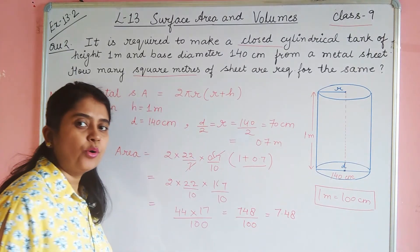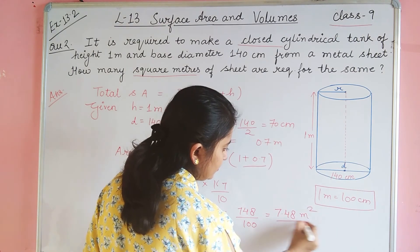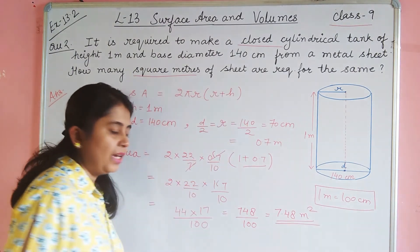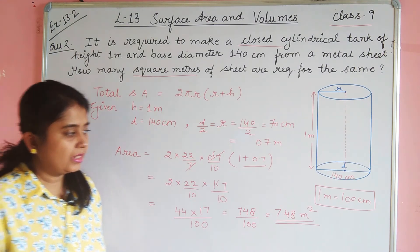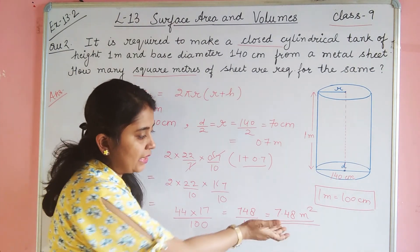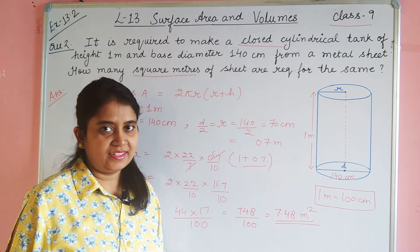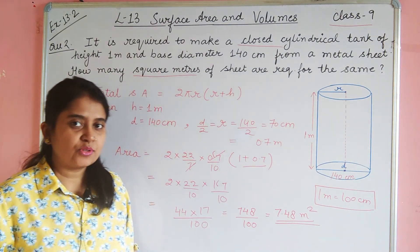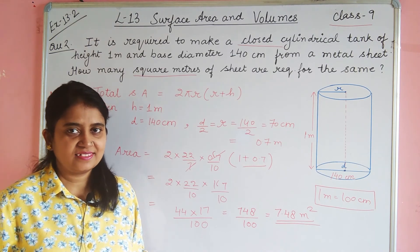7.48 and our unit is meter square. यानि की the total surface area हमने निकाला है cylinder का that comes out to be 7.48 meter square. और इतनी ही metal sheet आपकी इस closed cylindrical tank को बनाने में लागे ही. So this is step by step solution of this question. Do subscribe my channel for next updates, thank you.